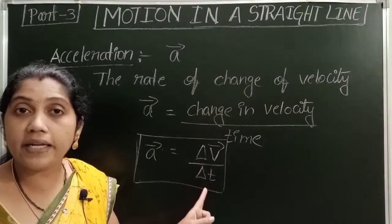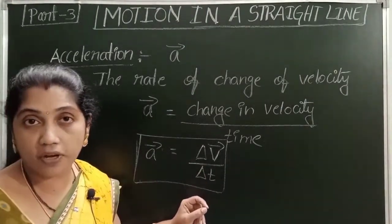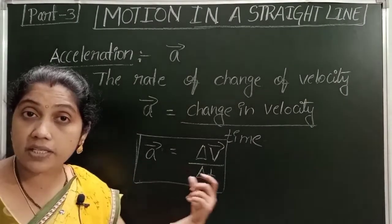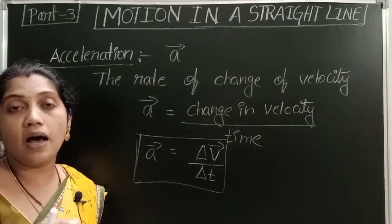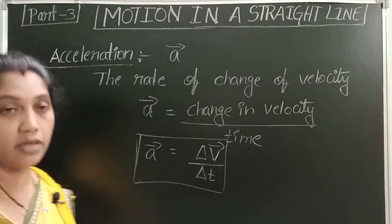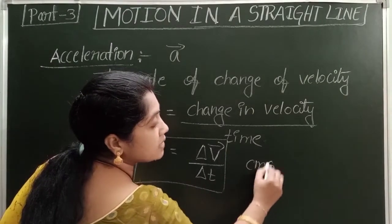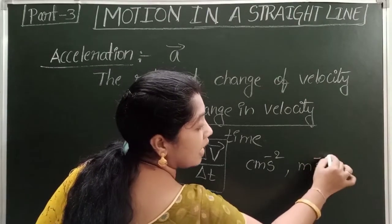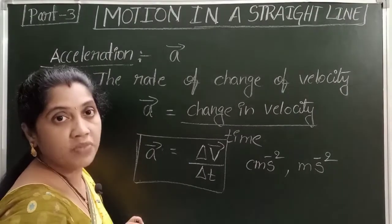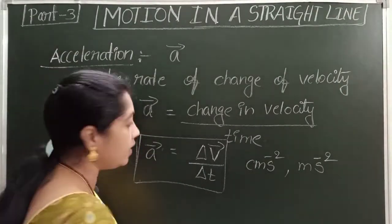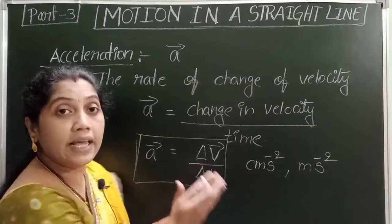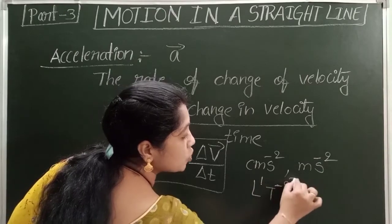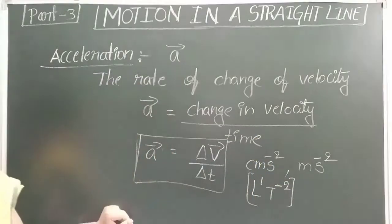Delta v-bar by delta t is the rate of change of velocity. Since velocity is a vector quantity, acceleration is also a vector quantity. The CGS unit of acceleration is centimeter per second square, and the SI unit is meter per second square. The dimensional formula of acceleration contains only length and time: L to the power 1, T to the power minus 2.